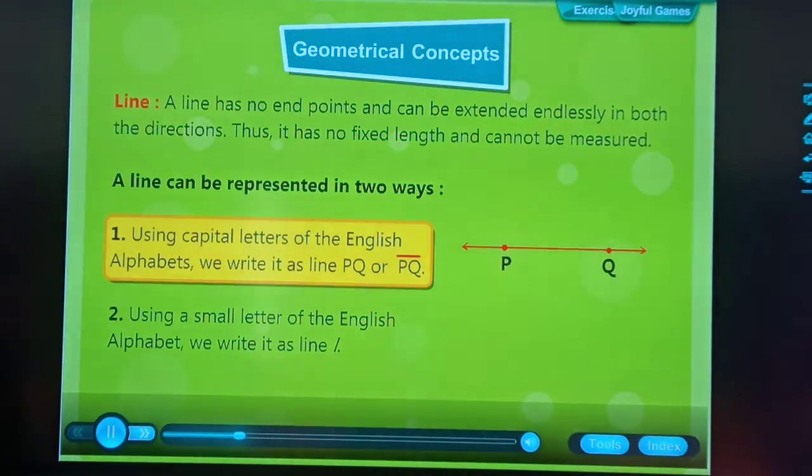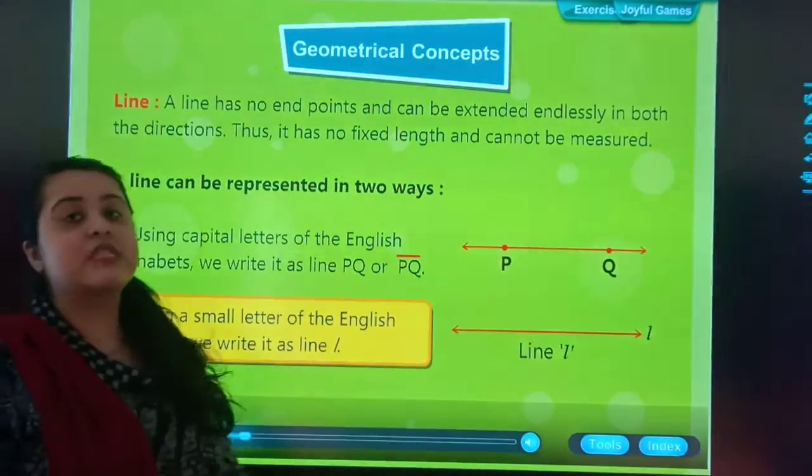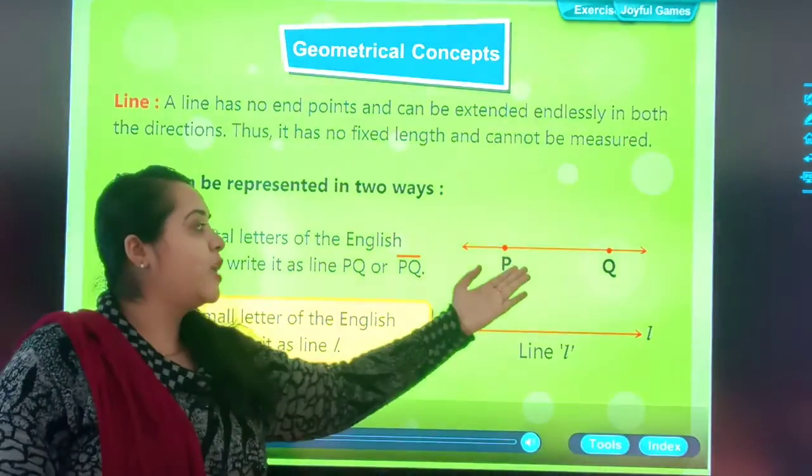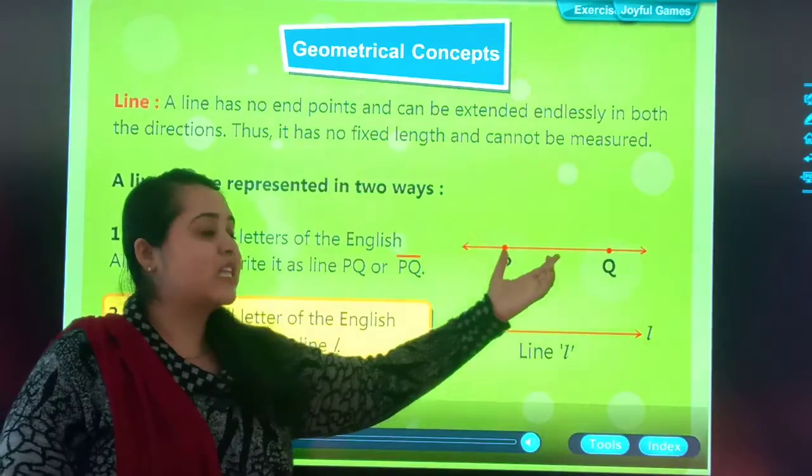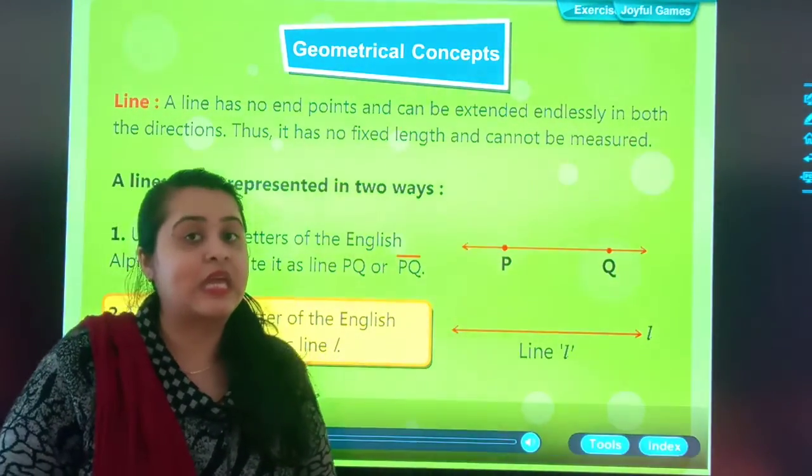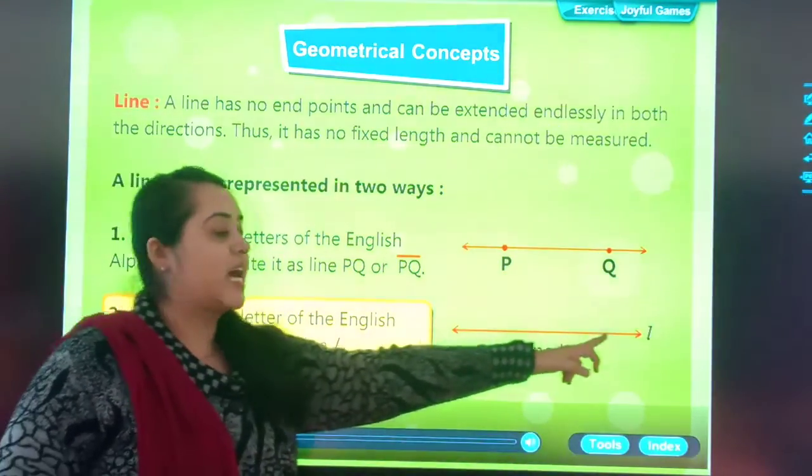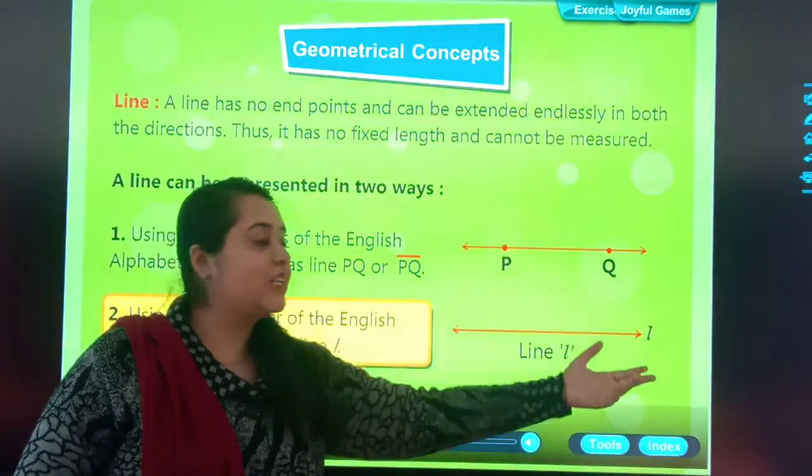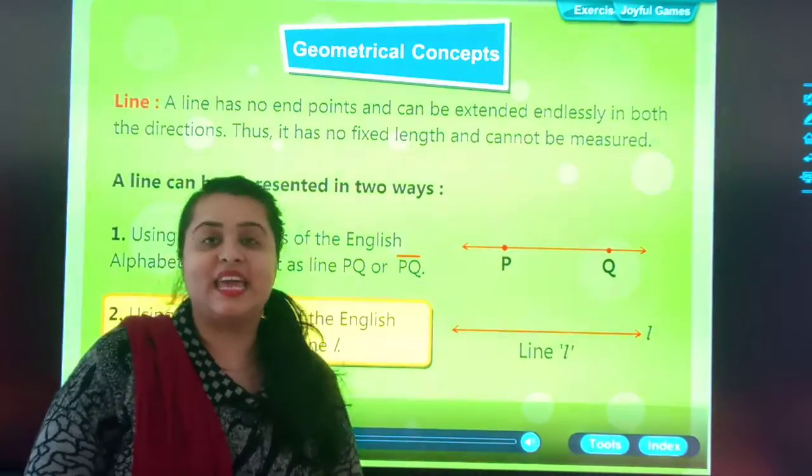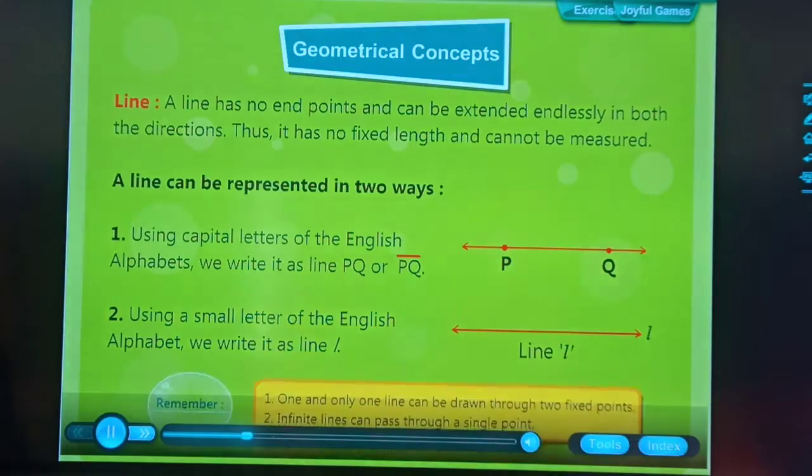Line P, Q, or Q, P. Using a small letter of the English alphabet, we write it as line. Line can be written in two ways. We can use capital letters of the alphabet and put two dots or two points on the line to give the line a name. Or we can use a smaller letter like L, which is used as the line name, like line L.